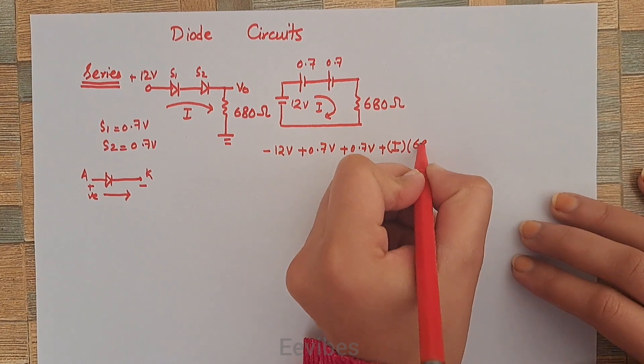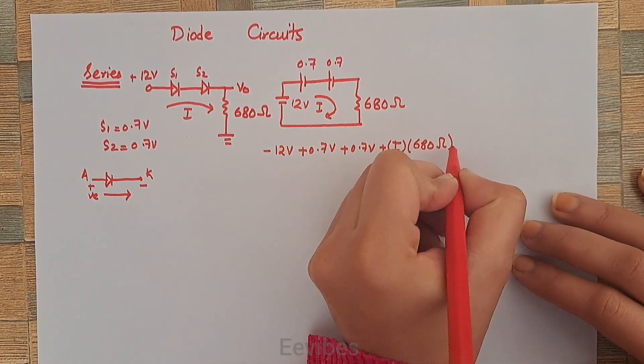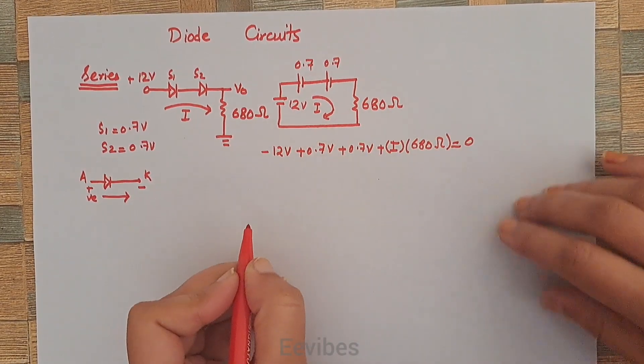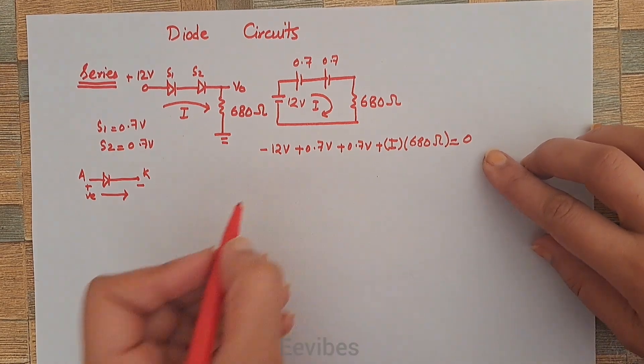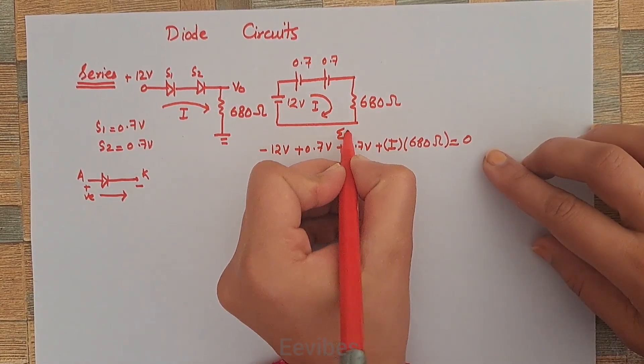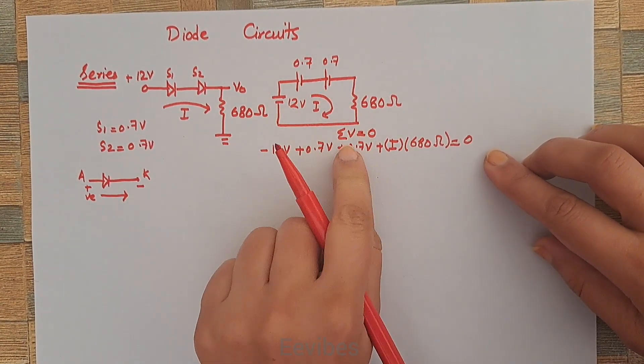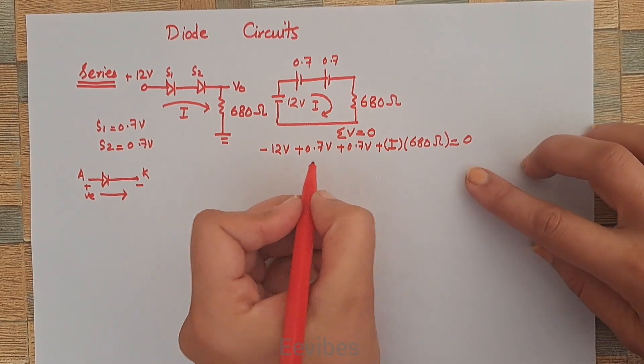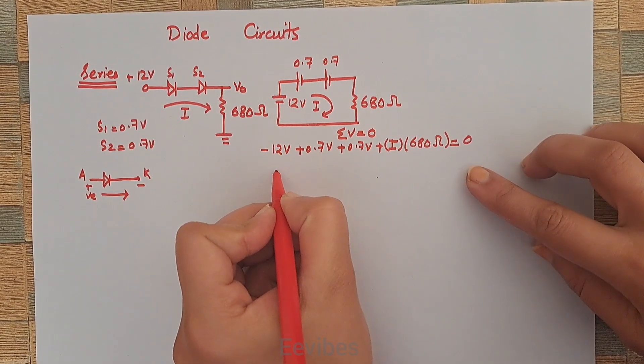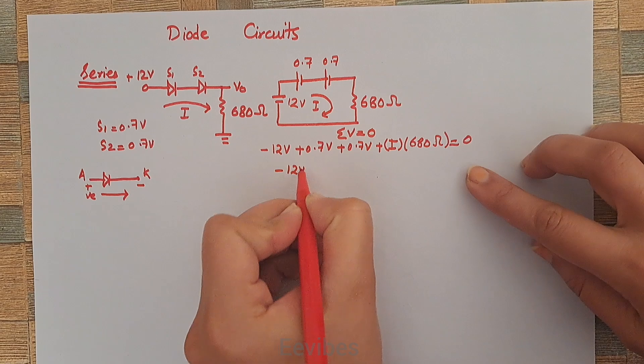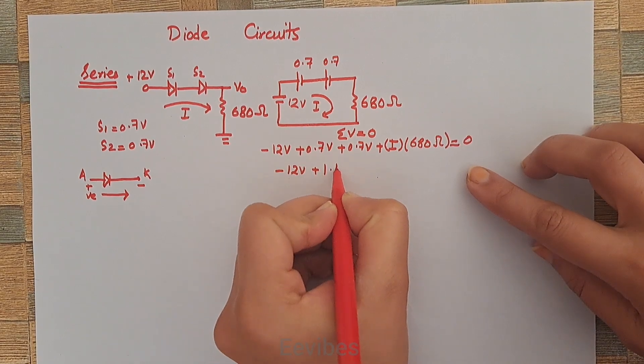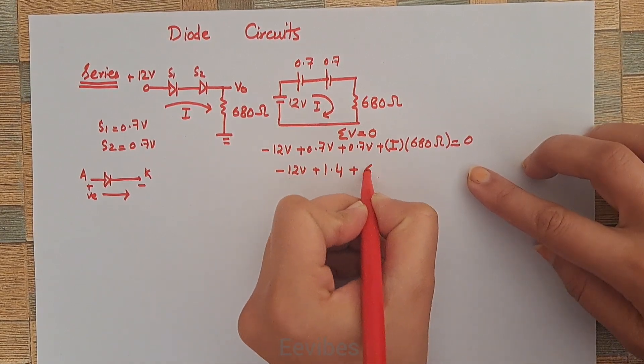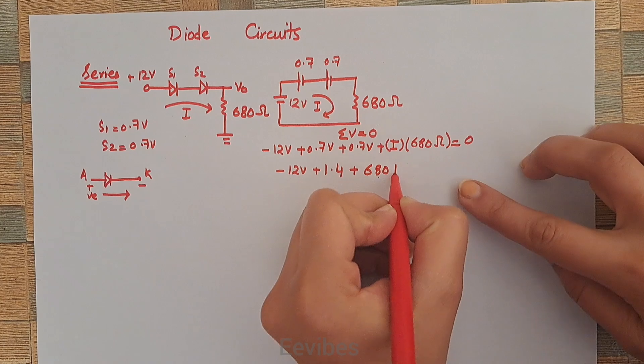Since summation of V equals 0 according to KVL, let's simplify it further. It becomes -12V + 1.4V + 680Ω × I = 0.